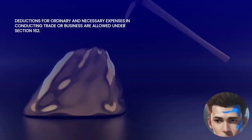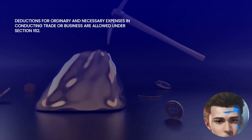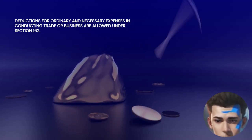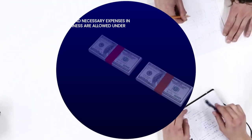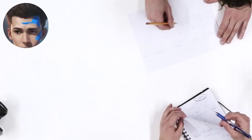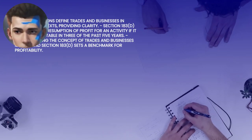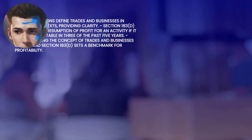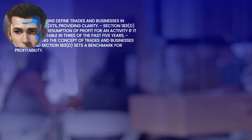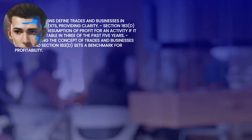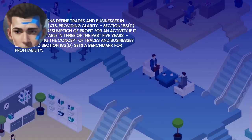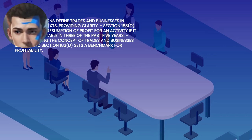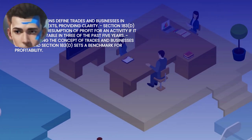While not explicitly defining business, Section 162 implies an activity engaged in with continuity and regularity for profit or income generation. Throughout the code, specific provisions refer to trades or businesses in various contexts, further shaping the understanding. For example, Section 183(d) establishes a presumption that an activity with profit in three of five preceding years is a business.